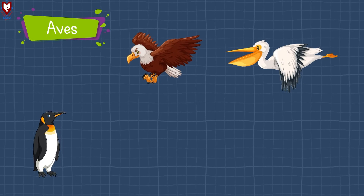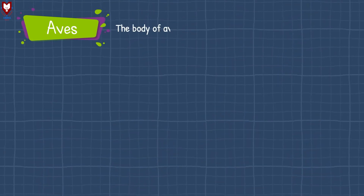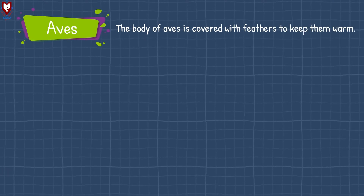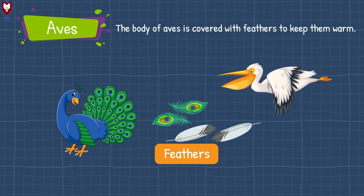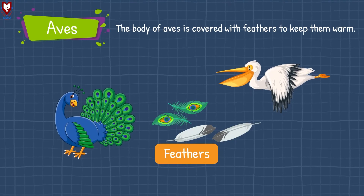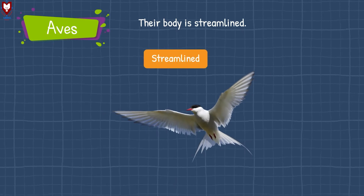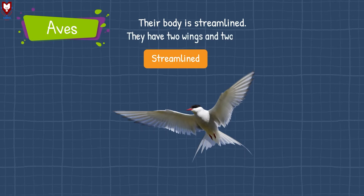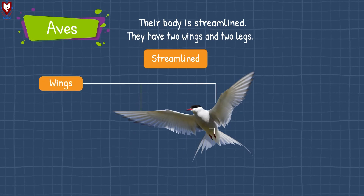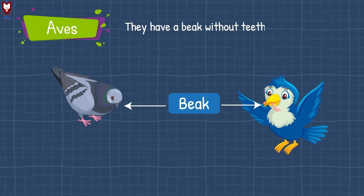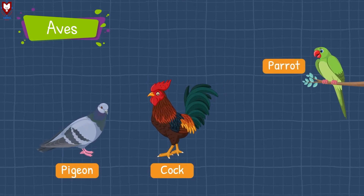The next class is Aves, or birds. The body of birds is covered with feathers to keep them warm. Their body is streamlined in shape. They have two wings and two legs. They have a beak without teeth. Some examples of Aves are pigeon, cock, parrot, duck, etc.